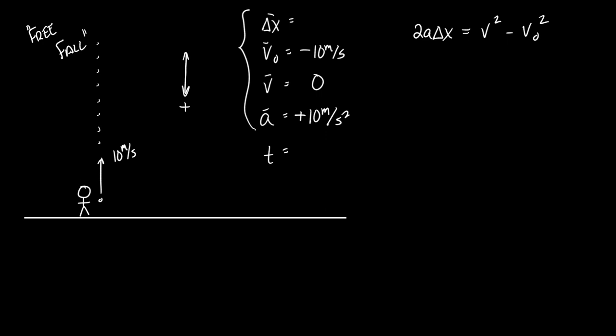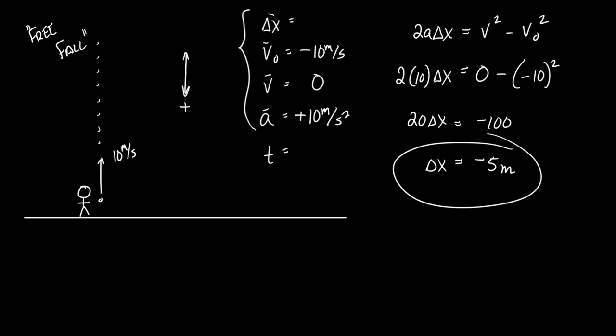Now if you do everything right, most of the time the problem will tell you the direction of your answer. Let's see if this one does. 2 times 10 times Δx equals 0 minus negative 10 squared. Let's see. 20 times Δx equals negative 100. Δx equals negative 5 meters. So the ball went upwards 5 meters into the air. Straightforward enough?